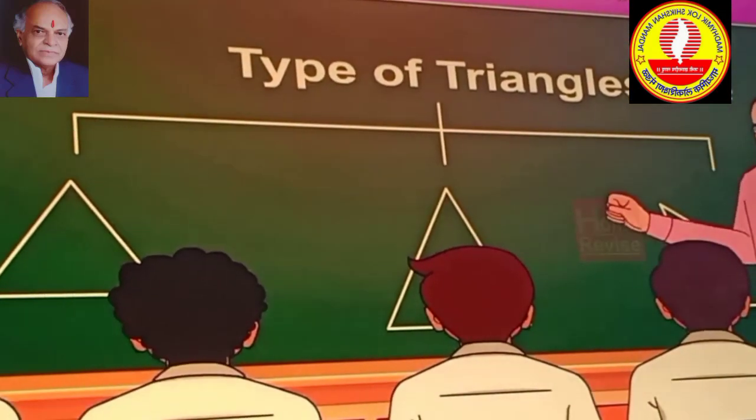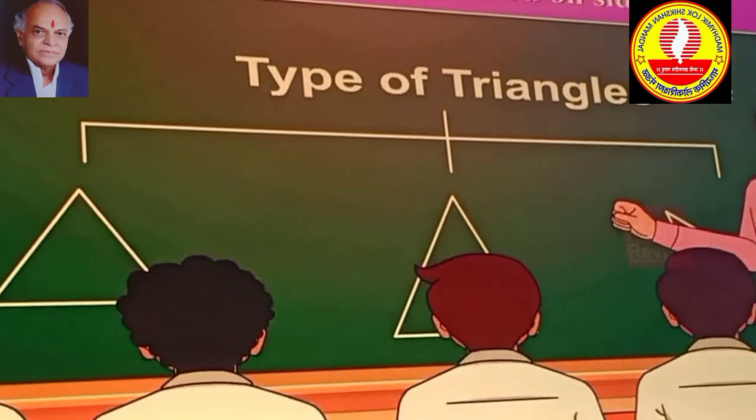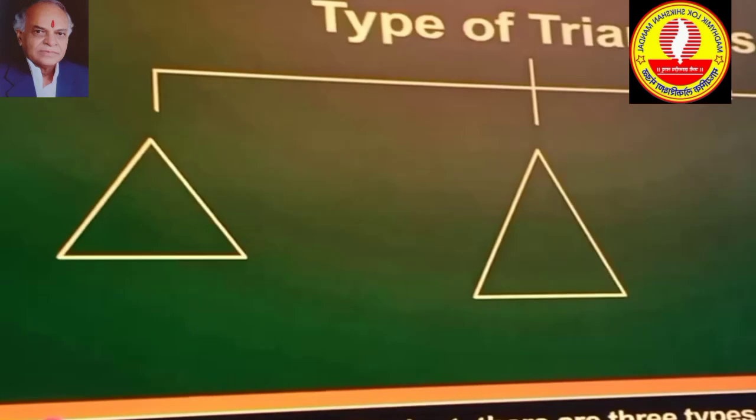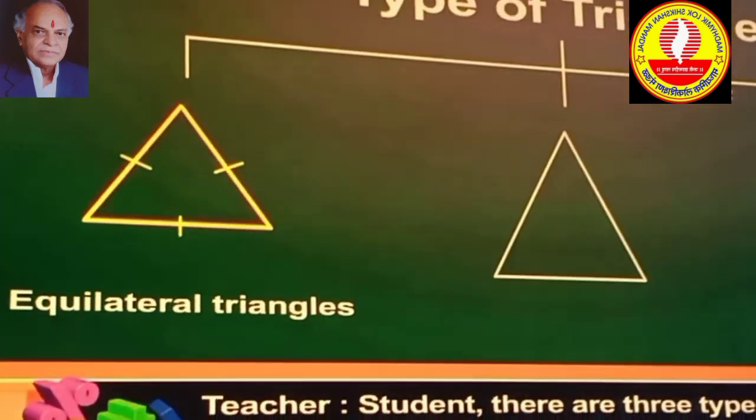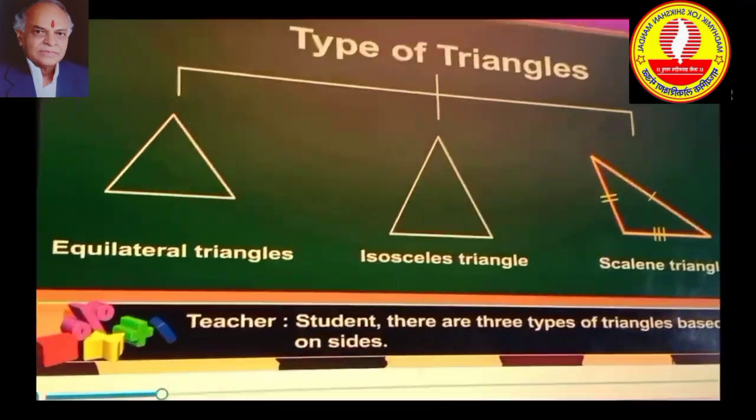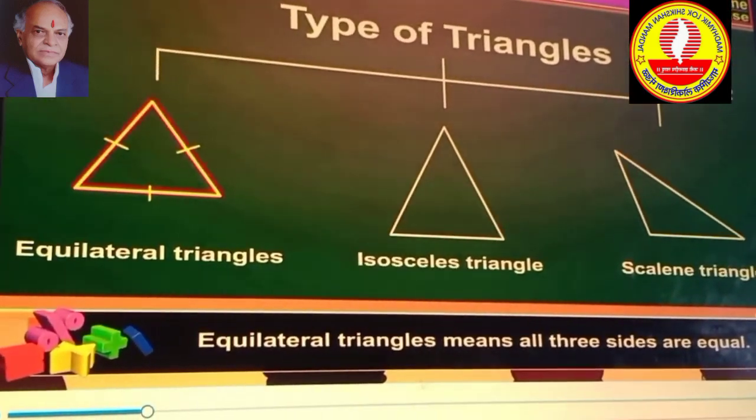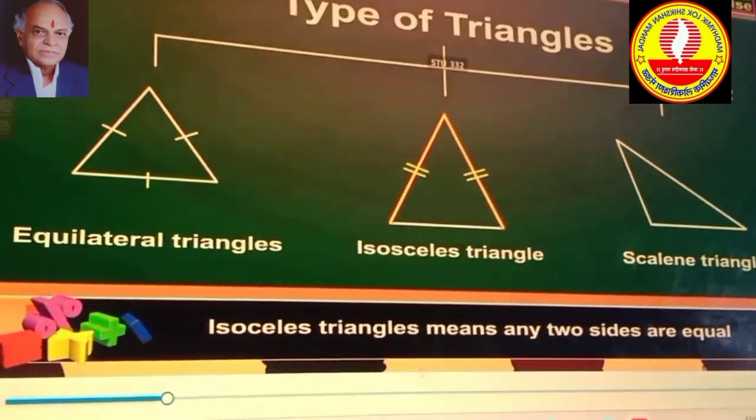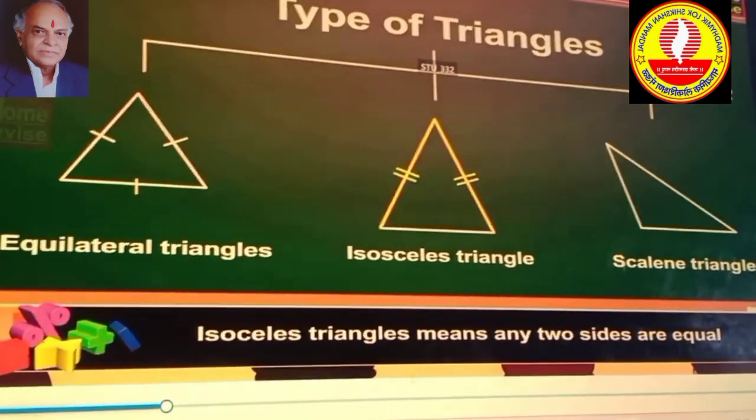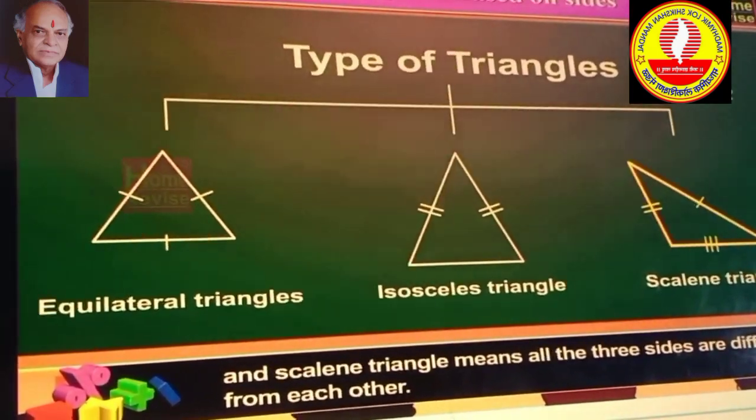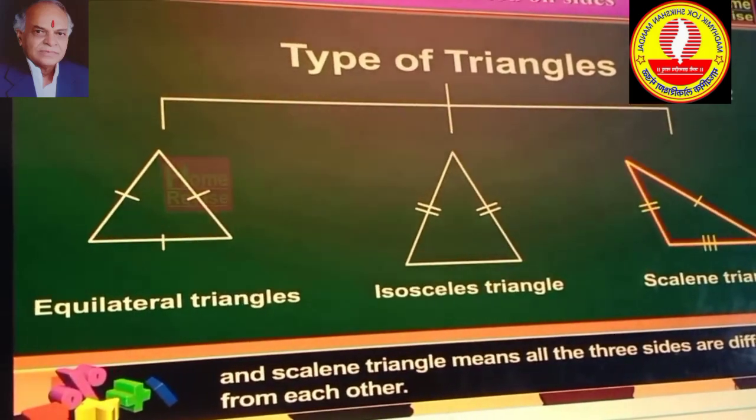Based on sides, students, there are three types of triangles. Types of triangles based on sides are: 1. Equilateral Triangle - all three sides are equal. 2. Isosceles Triangle - any two sides are equal. 3. Scalene Triangle - all three sides are different from each other.